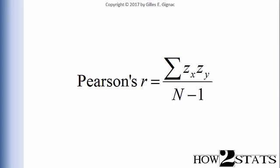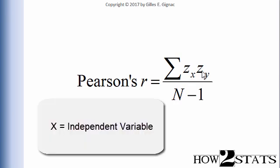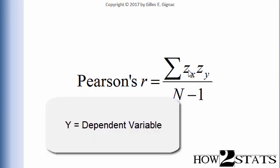But this formula here, which is the definitional formula of Pearson's r, is very intuitive. And the elements consist of mostly z-scores. So the z-scores of x and the z-scores of y are multiplied together.